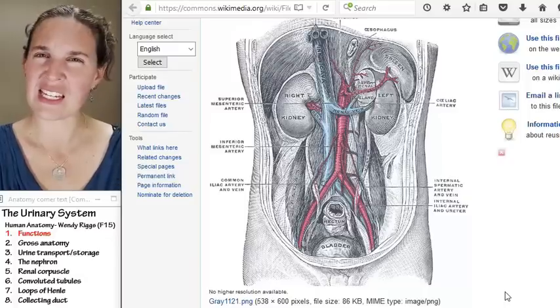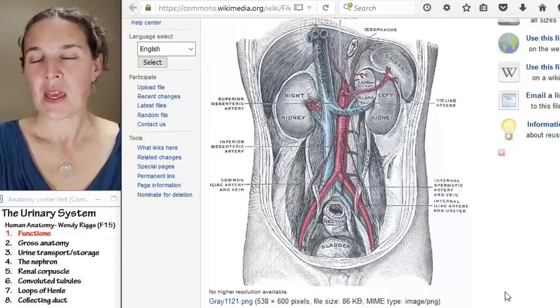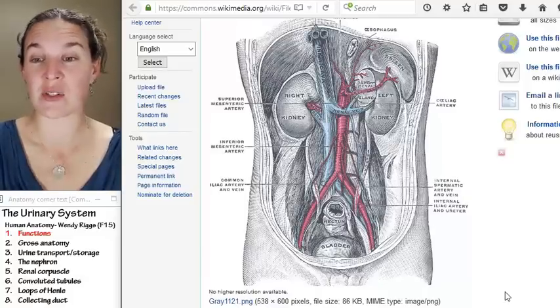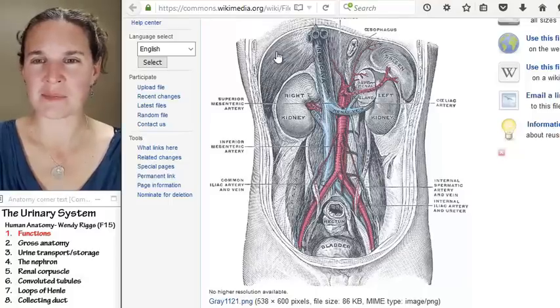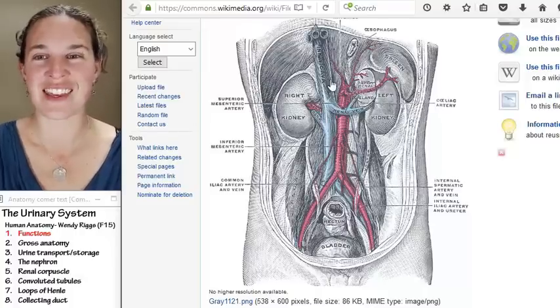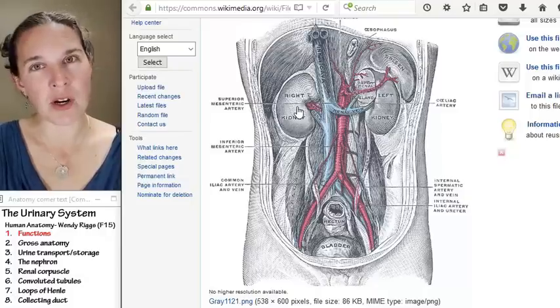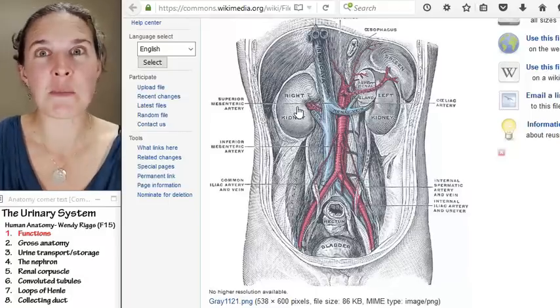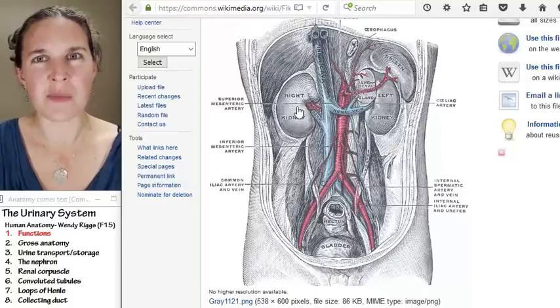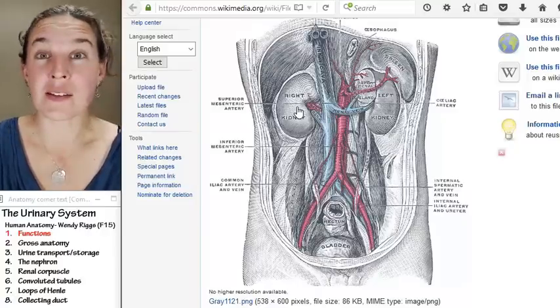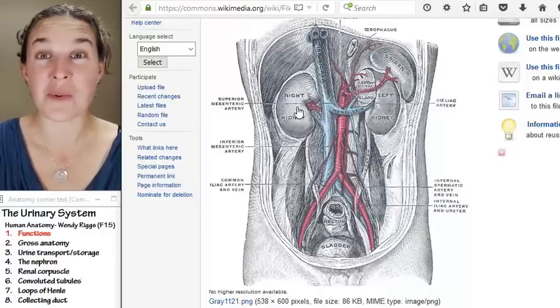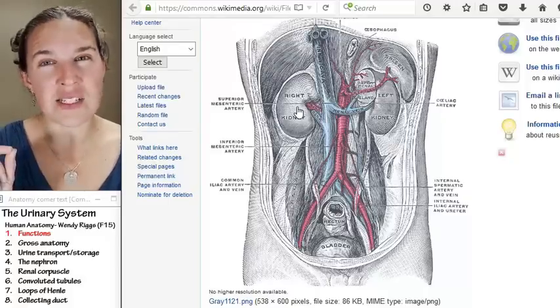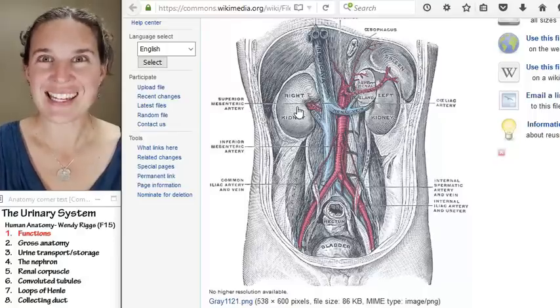If you remember, the kidneys are actually retroperitoneal. They're in the abdominal cavity, and you can see that here. You can see my diaphragm up here defining the superior border of the abdominal cavity. And you remember that the peritoneal cavity sits inside the abdominal cavity. The peritoneal cavity contains many digestive organs, not all of them though. And part of, for example, the duodenum is retroperitoneal, the pancreas retroperitoneal behind the peritoneal cavity. Those structures that are retroperitoneal are definitely included in the abdominal cavity. The kidneys are an example of that.